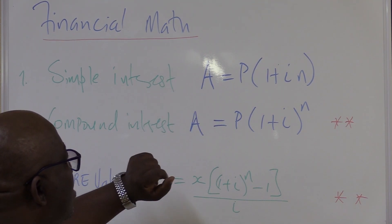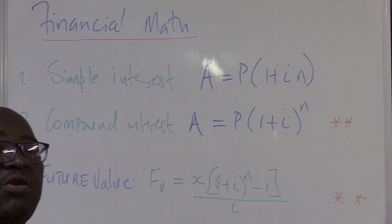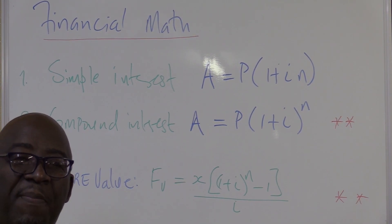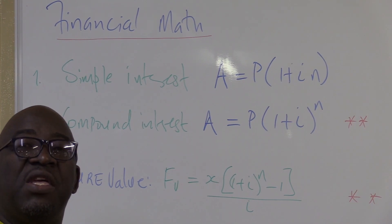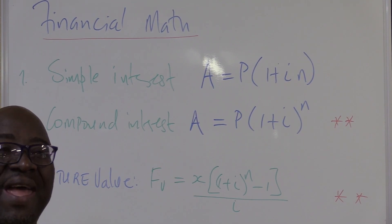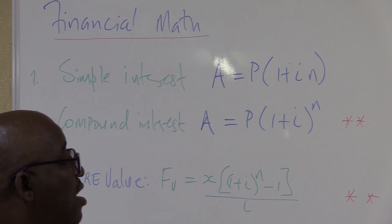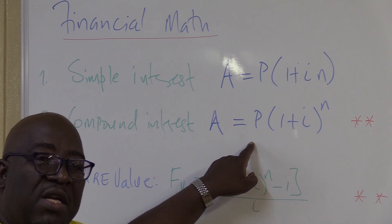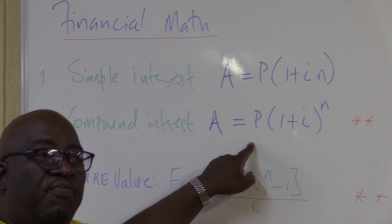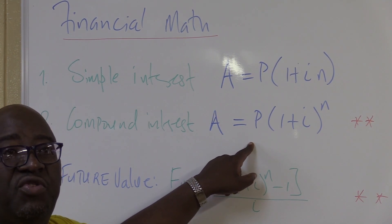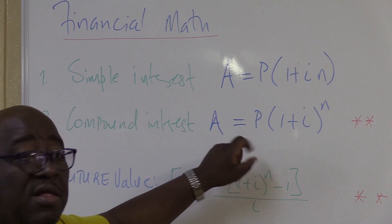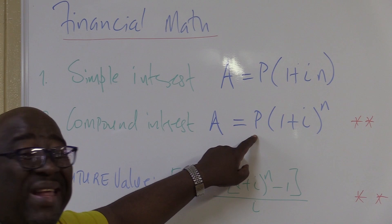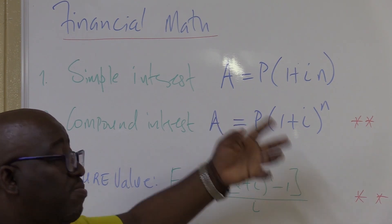Let's talk about the variables. A is the total amount at the end of the investment period — if you put a particular amount of money for a particular time, at the end with interest that amount is called A. P is the principal amount, the money that you deposit in the bank so that it gains interest — the original amount, also called the capital, that you deposit into a bank or any financial institution so that it may gain interest.